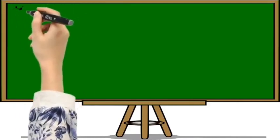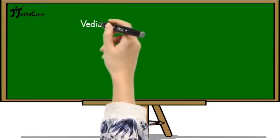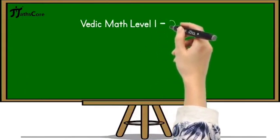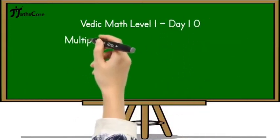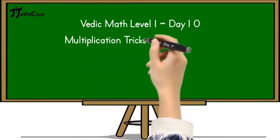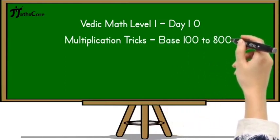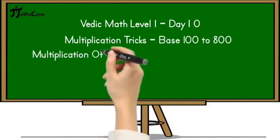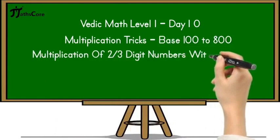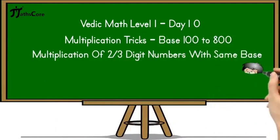Hello everyone, welcome to MathScore. It's Vedic Math Level 1, Day 10. Today we will learn about multiplication tricks from base 100 to 800. In this video we will learn about multiplication of 2 or 3 digit numbers with the same base. So let's start it.